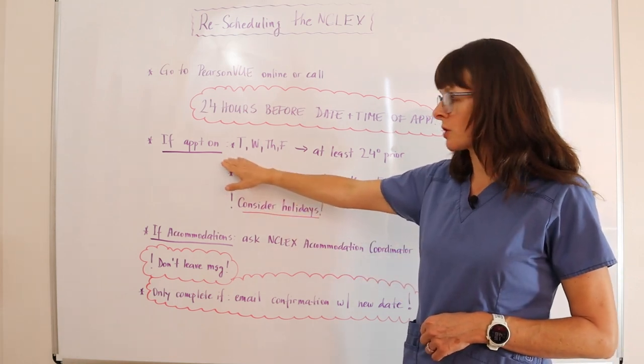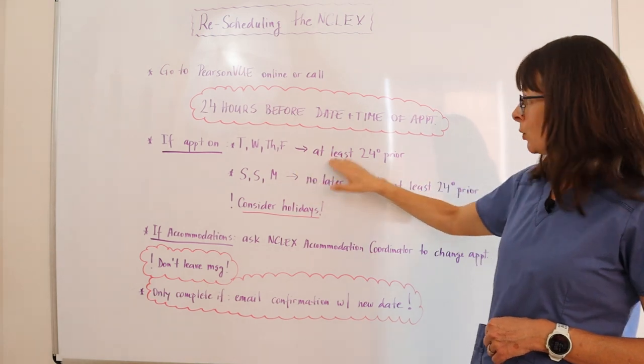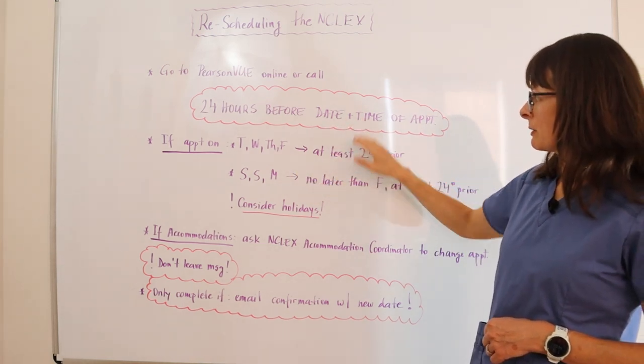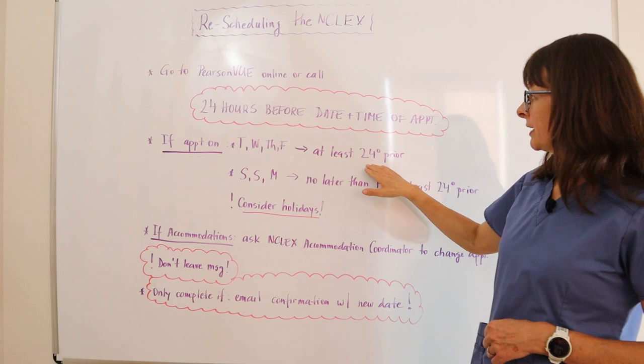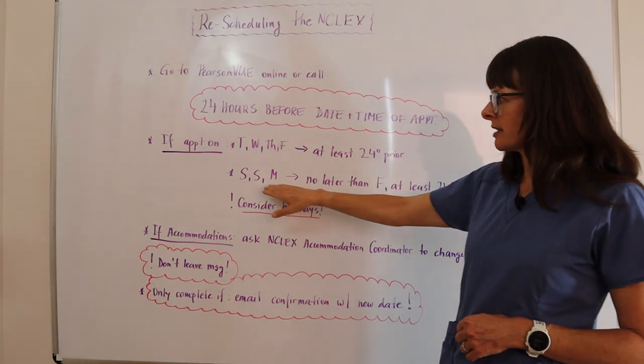If your appointment was scheduled for a Tuesday, Wednesday, Thursday, or Friday, the rule applies with 24 hours before the date and time of the appointment, but at least 24 hours. But then consider weekends.